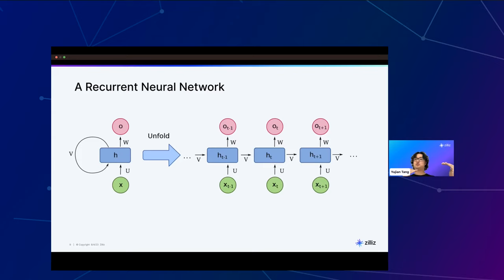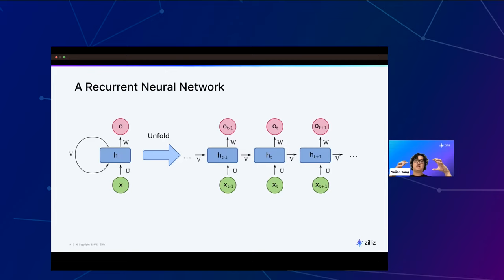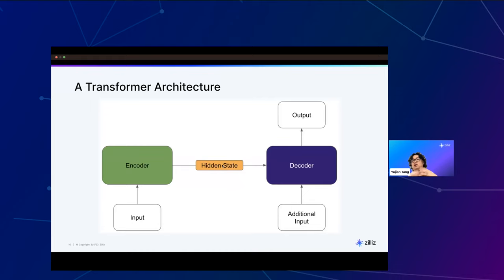RNNs come with problems: you lose context over time due to the sliding window, and you need same-length sequence-to-sequence transformations. Transformers solve this by allowing you to save context into a hidden state. Transformers are composed of an encoder, a decoder, a hidden state, and an additional input called self-attention. The hidden state and self-attention are both matrices — essentially bunches of vectors. The encoder takes text input, runs calculations, and produces a hidden vector capturing the current context, token position, and state of the input.